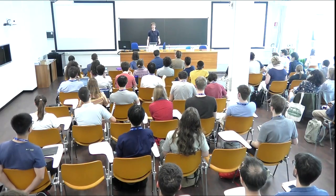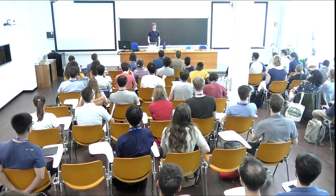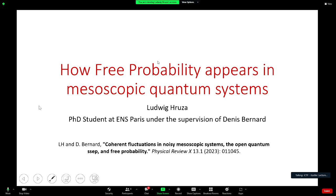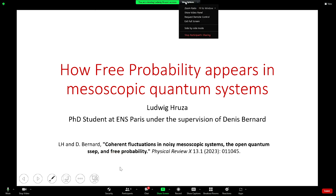I will tell you how free probability appears in noisy mesoscopic quantum systems. This title is more sketchy than what it actually is, so maybe an experimental physicist working on mesoscopic systems would not agree, but I hope it still comes close. My talk is based on a paper we wrote recently, called 'Coherent Fluctuations in Noisy Mesoscopic Systems, the Open Quantum Step and Free Probability.' Most of the talk will be free probability, and then I'll show a little bit of the physical application, since I guess most of you are more interested in the mathematical side.